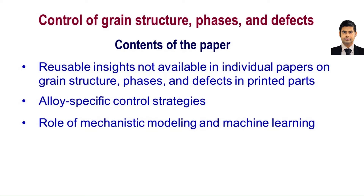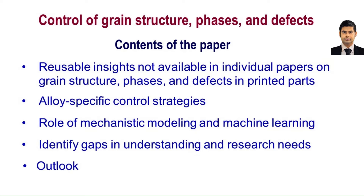We show how these cutting-edge technologies are shaping the future of additive manufacturing. We identify gaps in knowledge and research needs in the area of controlling the microstructure of printed metallic parts. This section will help identify important areas of research and collaboration. Finally, we provide an outlook into the future based on evidence — what can we expect in the ever-evolving world of additive manufacturing, particularly in the context of grain structure, phases, and defects.